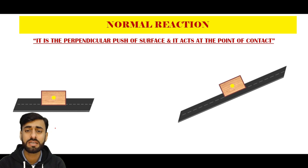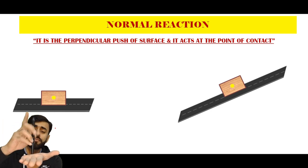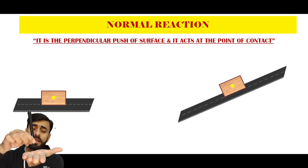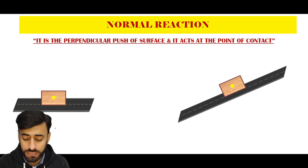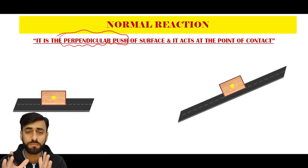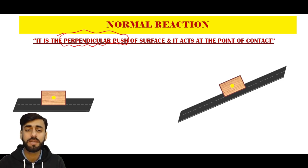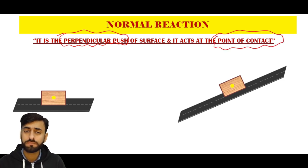For example, imagine my hand is the flat surface. I place this pen on it — the direction of the pen is the direction of the normal reaction force, and it makes 90 degrees with my palm. So the normal reaction force is always a perpendicular push from the surface. When you place any object on a flat surface, it pushes down, and the flat surface in return applies a perpendicular push upward, equal to the object's weight, from the point of contact.